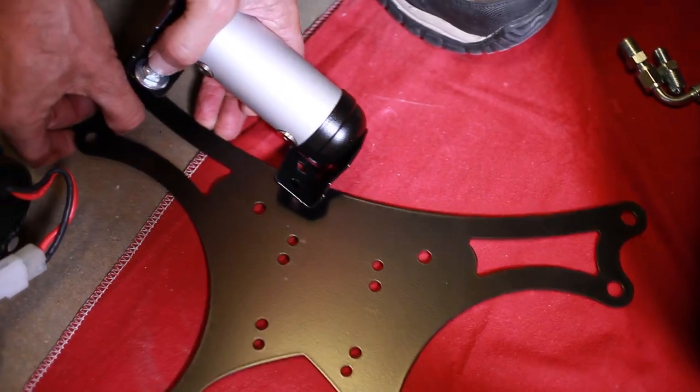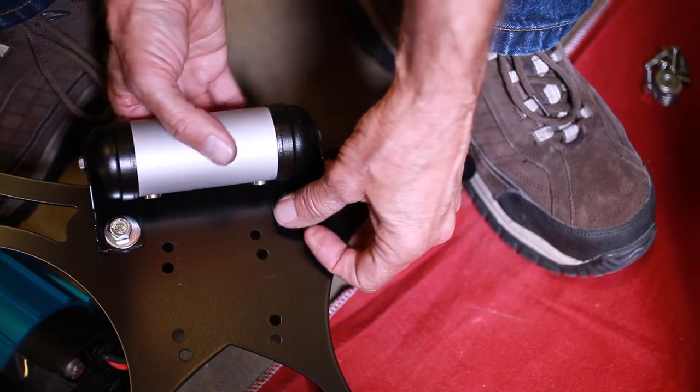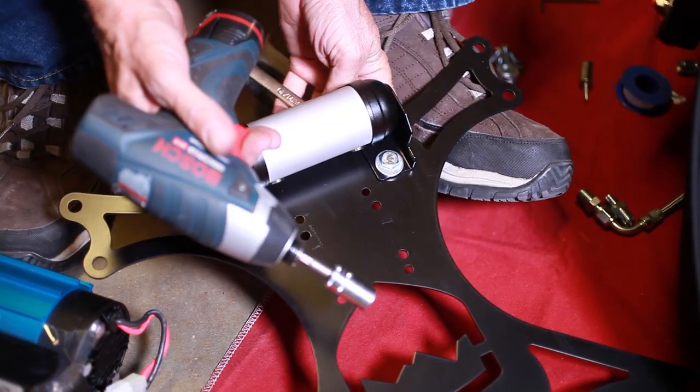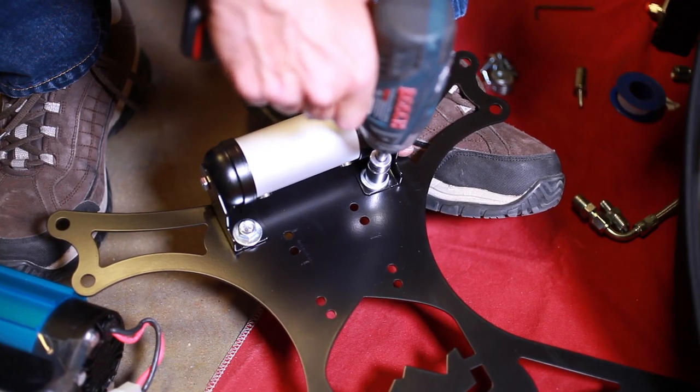For easier access to the mounting hardware, install the ARB manifold first using the provided 8 millimeter bolts, nuts, and washers. Tighten them up using a 13 millimeter socket and end wrench.